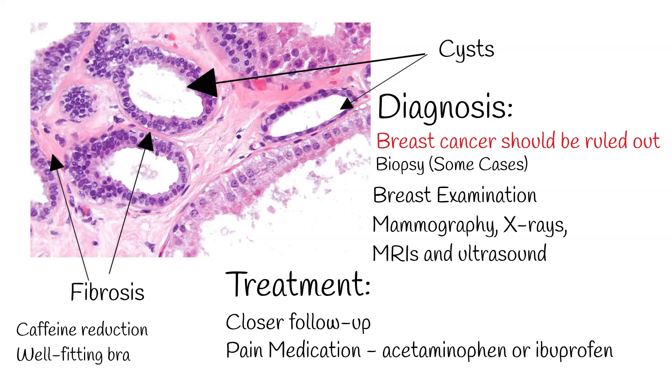However, fibrocystic breast can make breast cancer difficult to identify. For women who have a family history of breast cancer, the risk is doubled independently of the histological features of fibrocystic breast.